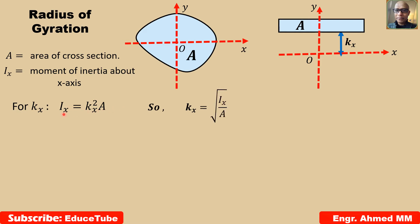So, what is the relation? Ix equal to kx square A. Solving, we get kx equal to square root of Ix by A. So, what we can say about this? The radius of gyration is termed as a square root of the ratio of moment of inertia to the cross sectional area of the column.